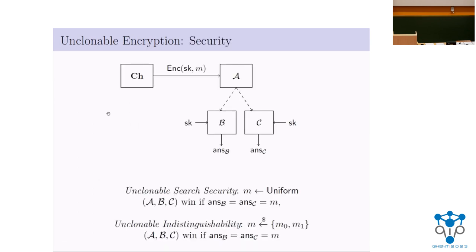What is different is the security notion. Informally, we want that any adversarial entity should not be able to produce multiple copies of the ciphertext state. Formally, this is a three-party adversary A, B, C: Alice receives a ciphertext state, creates a bipartite state and gives it to Bob and Charlie. Bob and Charlie cannot communicate, independently receive the secret key, and must simultaneously output answers. One security notion is search security: the message is drawn uniformly at random, and both Bob and Charlie must simultaneously output this message.